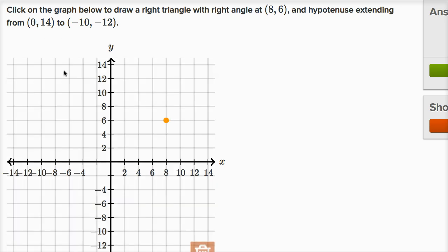Then we have one at zero comma 14. So x equals zero, y is equal to 14, and it drew the line there.